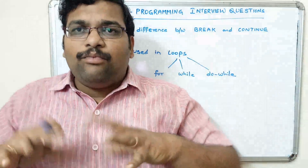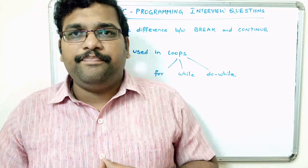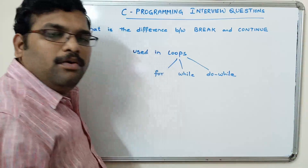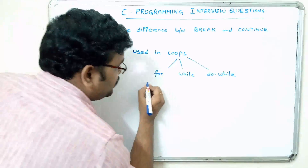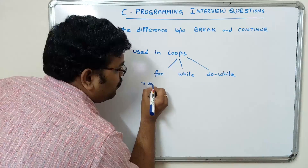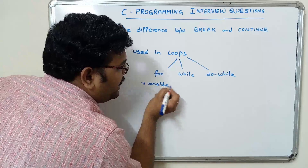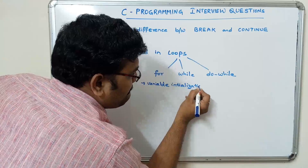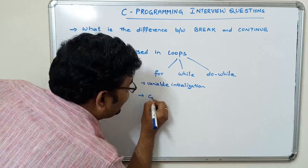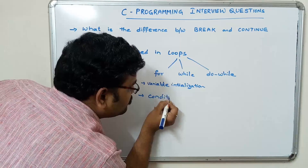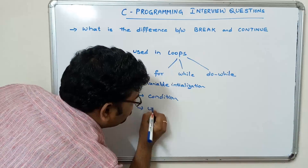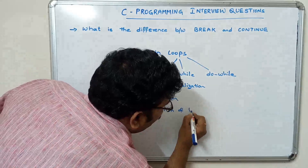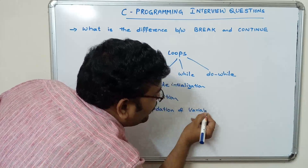So what is the difference between break and continue? In every loop, we will see three concepts: variable initialization, second one condition, third one increment or addition of the variable — we call it as the loop variable.